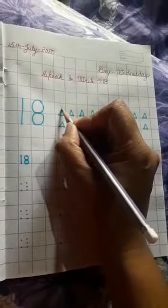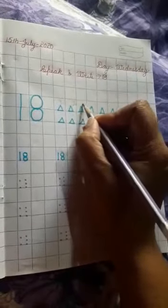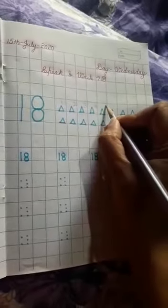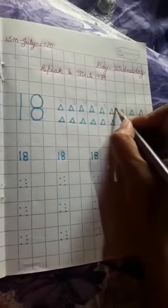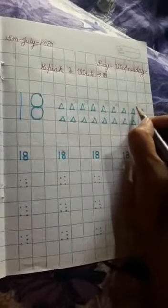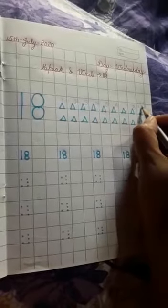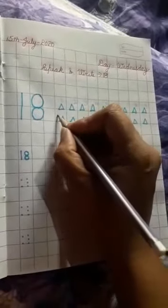Okay, firstly count the triangles. This is 1, 2, 3, 4, 5, 6, 7, 8, 9, 10.